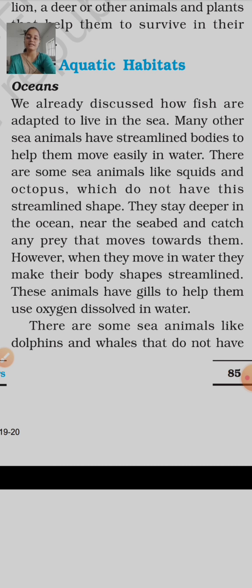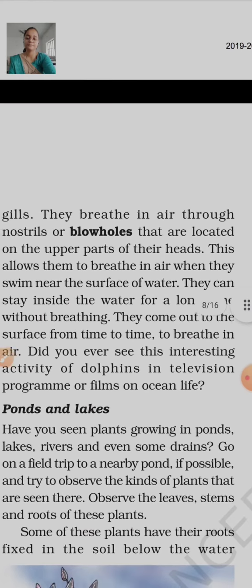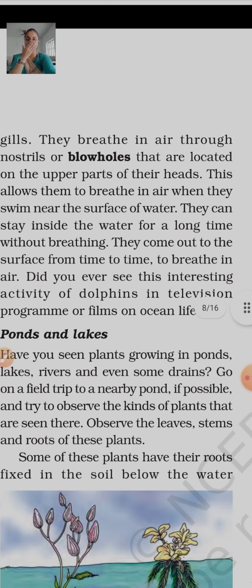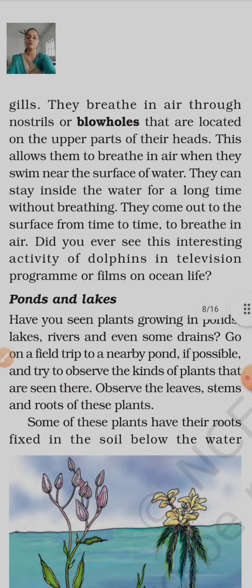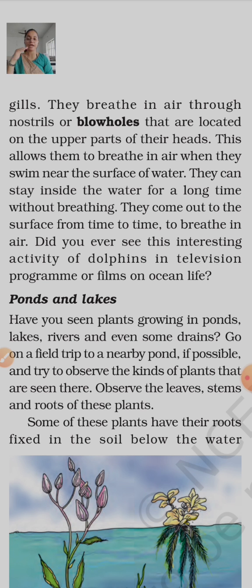There are some sea animals like dolphins and whales that do not have gills. They breathe in air through nostrils or blow holes that are located on the upper side of their head. This allows them to breathe in air when they swim near the surface of the water.